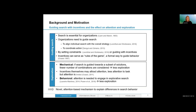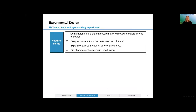We are interested in a more behavioral mechanism — the idea that if incentives are implemented, the incentives themselves may attract attention. A decision maker might consider whether to respond to these incentives or how to respond, and thereby incentives attract attention and might distract the decision maker from engaging in more explorative search. In this study we want to put forward the idea of a novel attention-based mechanism to explain differences in search behavior. For this second behavioral mechanism, we actually need experiments — in this case an eye-tracking experiment — to better understand it. We need a combinatorial multi-attribute search task because we're interested in the explorativeness of search, and we want to vary incentives on one particular attribute in different ways.